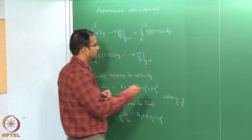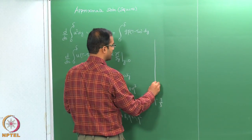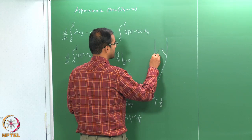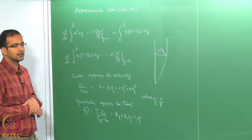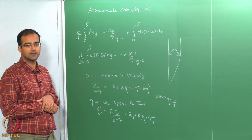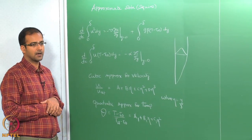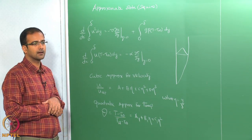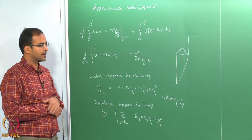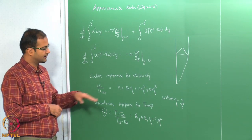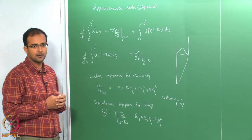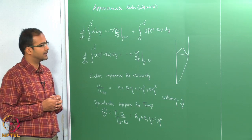Since the natural convection problem has a maximum in the velocity profile somewhere within the boundary layer, we have to be careful to choose a reasonably good approximation for this variation. We cannot predict this with a linear profile or even a quadratic profile. So, unlike the external forced convection boundary layer, the minimum order we have to take for the velocity profile is a cubic polynomial.